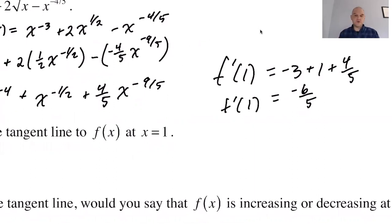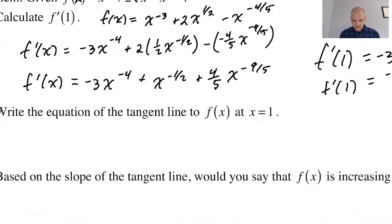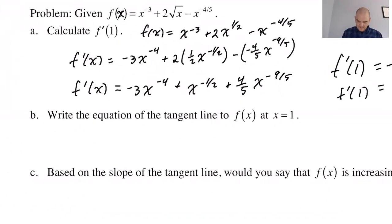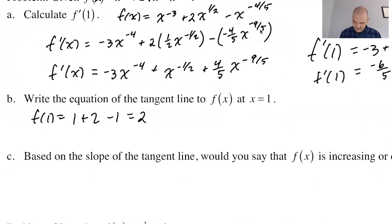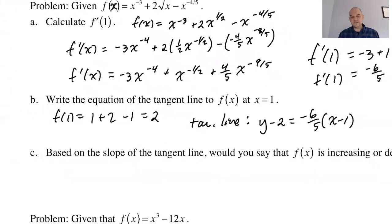So that's f prime of 1, which we know means that's the slope of the curve at x equals 1. It's also the slope of the tangent line, so if we want the equation of the tangent line, we're gonna need to know what f of 1 is. F of 1 is just 1 plus 2 minus 1, so 2. 1 is a great number to plug into this particular function—any other number is probably not gonna be that great. So the tangent line is y minus 2 equals negative 6/5 times x minus 1.